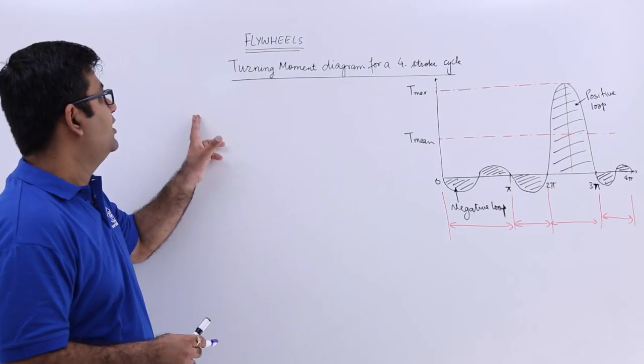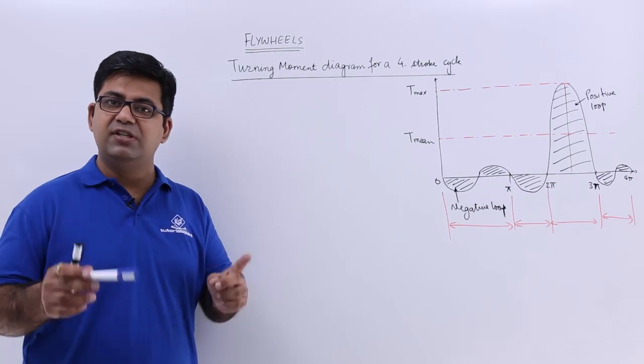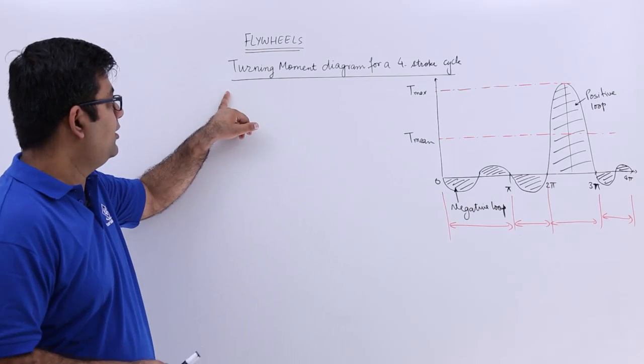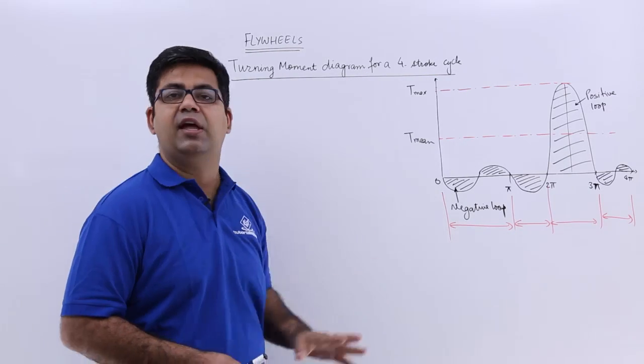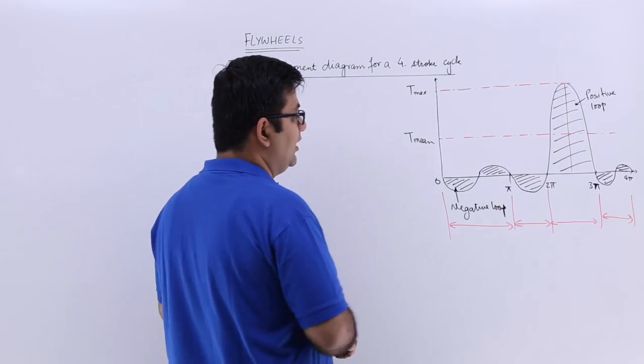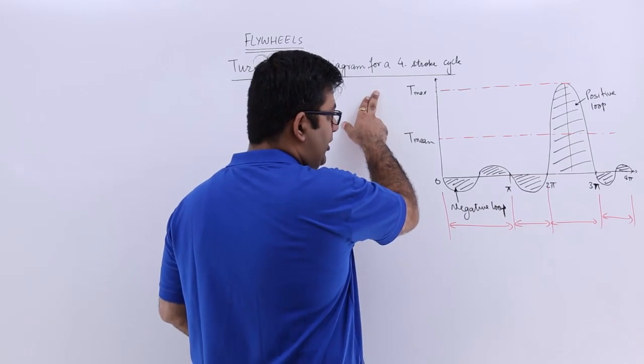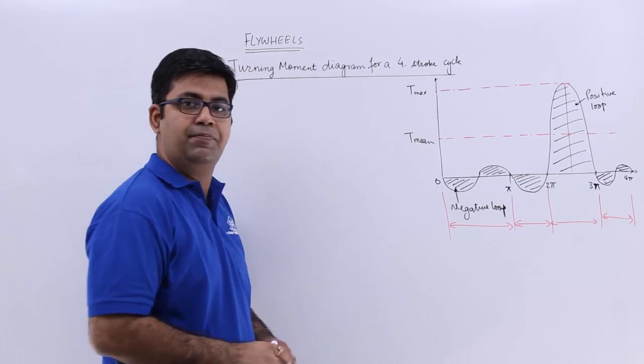Now let's start discussing the flywheel. In the very first video, we'll look at the turning moment diagram for a four-stroke cycle. You can see that this is a plot between torque and the crank angle.